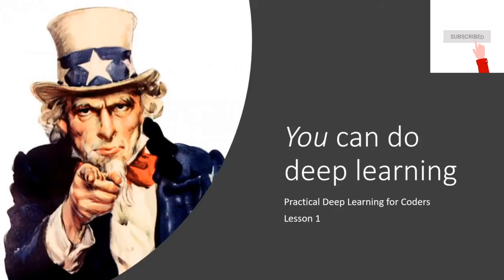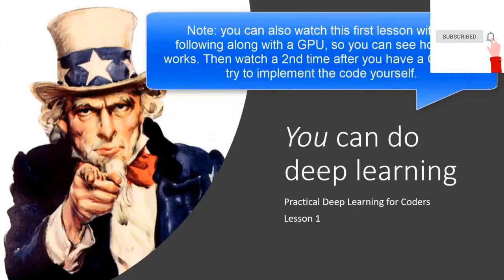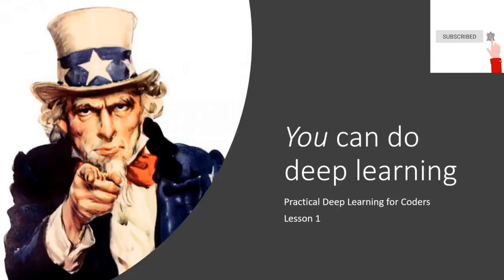Welcome to Practical Deep Learning for Coders, Lesson One. This is kind of Lesson Two because there's a Lesson Zero — Lesson Zero covers why you need a GPU and how to get it set up. So if you haven't got a GPU running yet, go back and do that, make sure you can access a Jupyter notebook, and then you're ready to start the real Lesson One.